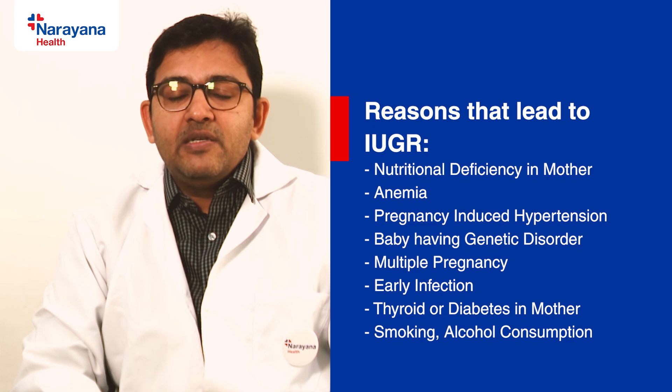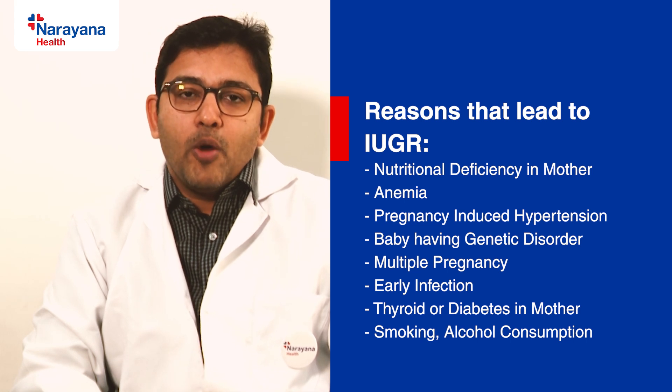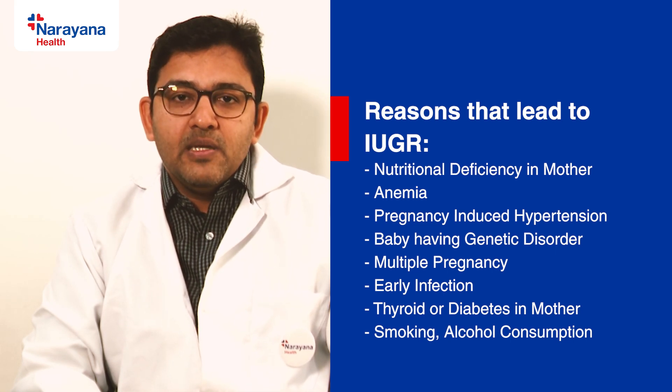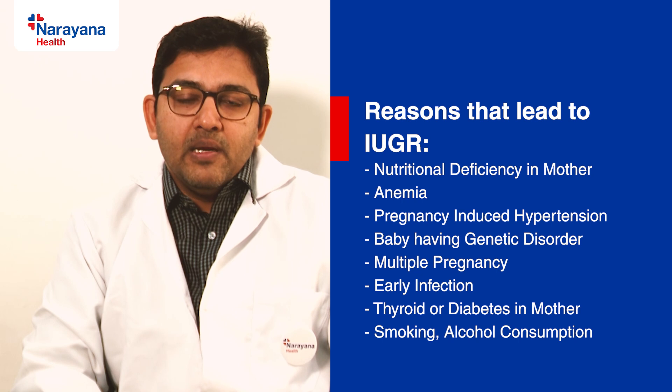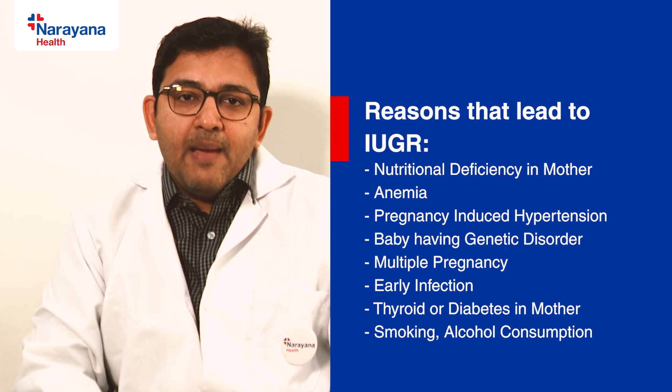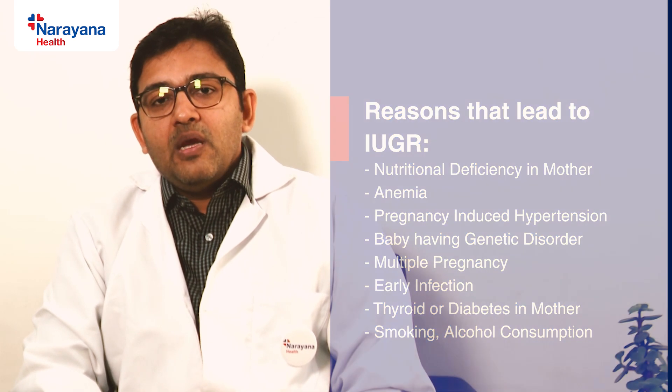Asymmetrical IUGR means the baby's head and bones are adequately grown as per the gestational period, but the abdominal circumference or abdominal growth is restricted. Common reasons for IUGR include nutritional deficiency in the mother, anemia, low hemoglobin, and pregnancy-induced hypertension — high blood pressure during pregnancy — which can cause IUGR.